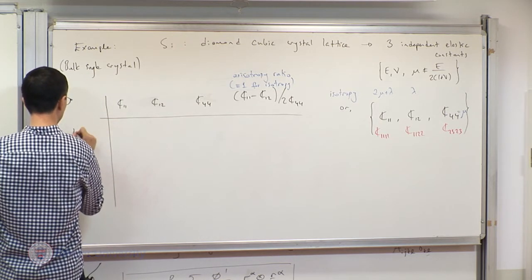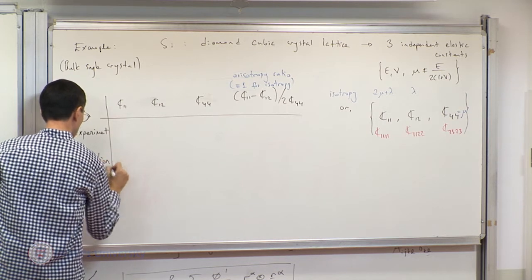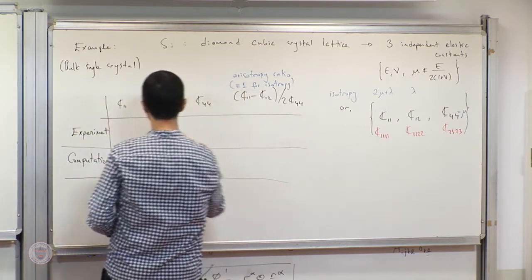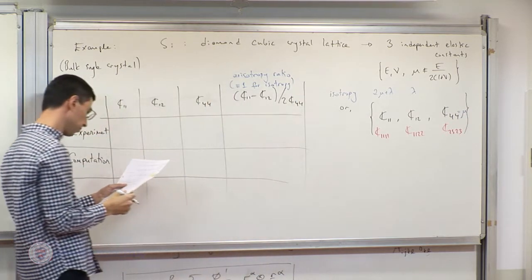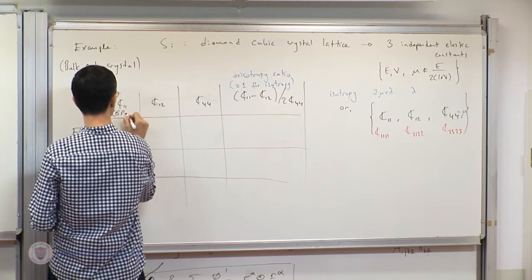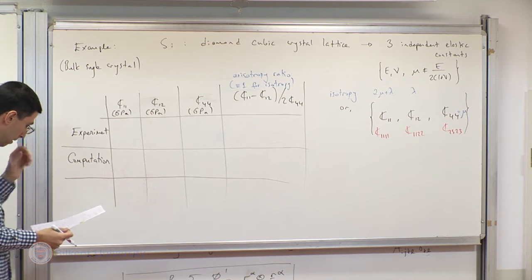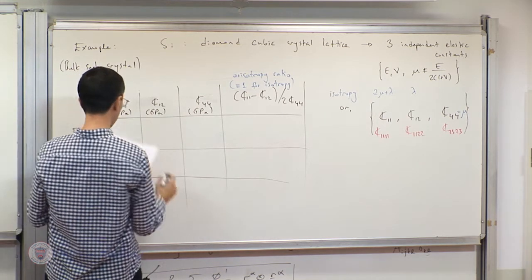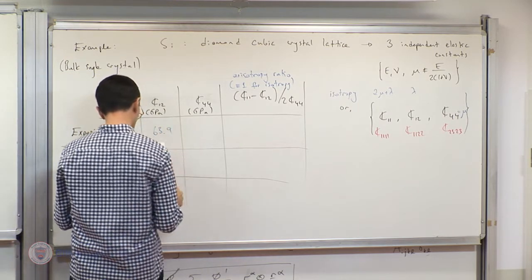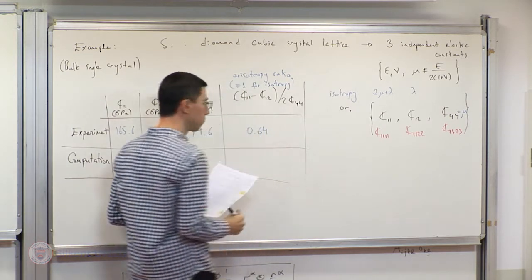Looking at the results: experimentally, C11 = 165.6 GPa, C12 = 63.9 GPa, C44 = 79.6 GPa, giving an anisotropy ratio of 0.64. Computationally, using the Cauchy-Born hypothesis with an interatomic potential, C11 = 142.6 GPa, C12 = 75.4 GPa, C44 = 118.8 GPa, giving an anisotropy ratio of 0.28.